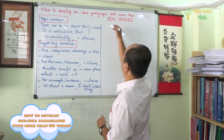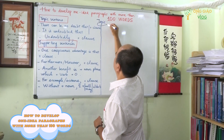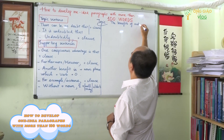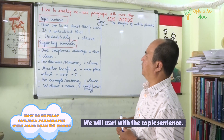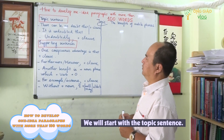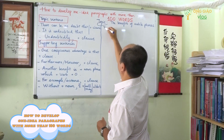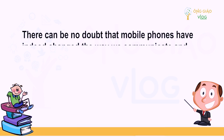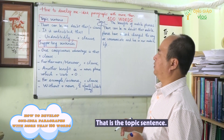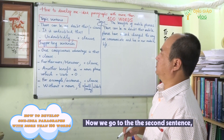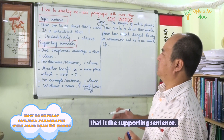Now we begin with the topic about the benefits of the mobile phone. We start with the topic sentence: 'There can be no doubt that mobile phones have indeed changed the way we communicate and live in our modern life.' That is the topic sentence.